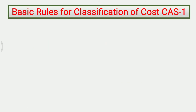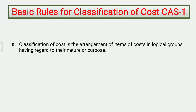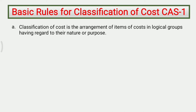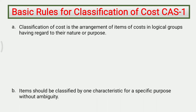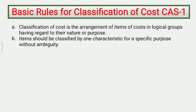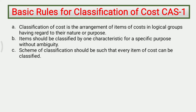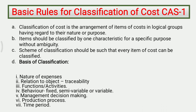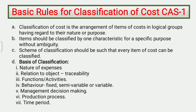Basic rules for Classification of Cost Accounting Standard 1. First rule: classification of cost is the arrangement of items of cost in logical groups having regard to their nature and purpose. Second point: items should be classified by one characteristic for a specific purpose without ambiguity. Third point: the scheme of classification should be such that every item of cost can be classified. D point: basis of classification — nature of expenses, relation to object i.e. traceability, functions or activities, behavior i.e. fixed, semi-variable or variable, management decision making, production process, and time period.